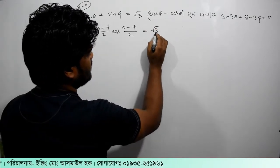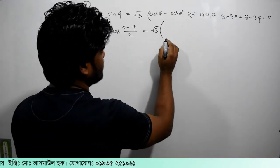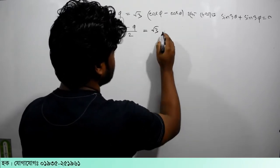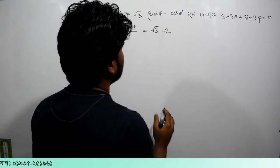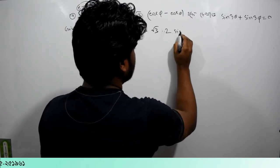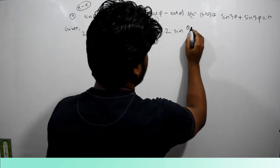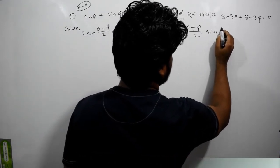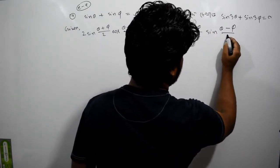Then we now get root 3 times 2 sin (a plus b)/2 times sin (a minus b)/2.